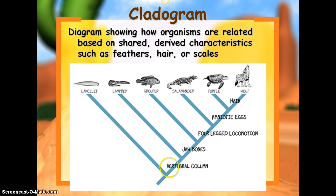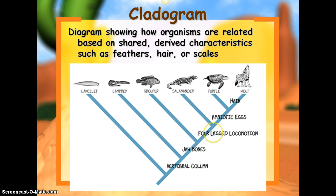Basically, if there's a trait that is listed, anything below it does not have that trait. So right here we have a lancelet, and then we have vertebral column, which classifies the rest of the organisms above that point — they have a vertebral column. Then we have a lamprey, and what classifies all the rest as different from the lamprey is a jawbone, so everything above lamprey has a jawbone. Then we have grouper, and above that we have four-legged locomotion — so salamander, turtle, and wolf all have four legs, and the grouper does not. Anything below it — grouper, lamprey, and lancelet — does not.